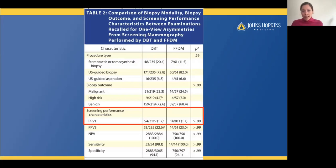This table shows a comparison of biopsy modality, biopsy outcome, and screening performance characteristics for the two groups, and again we did not see any significant difference. I want to specifically draw attention to the similar PPV1 and PPV3 between the two groups. PPV1 was 1.7% in both groups. PPV3 was 22.6% versus 23% in the two groups — no significant difference.